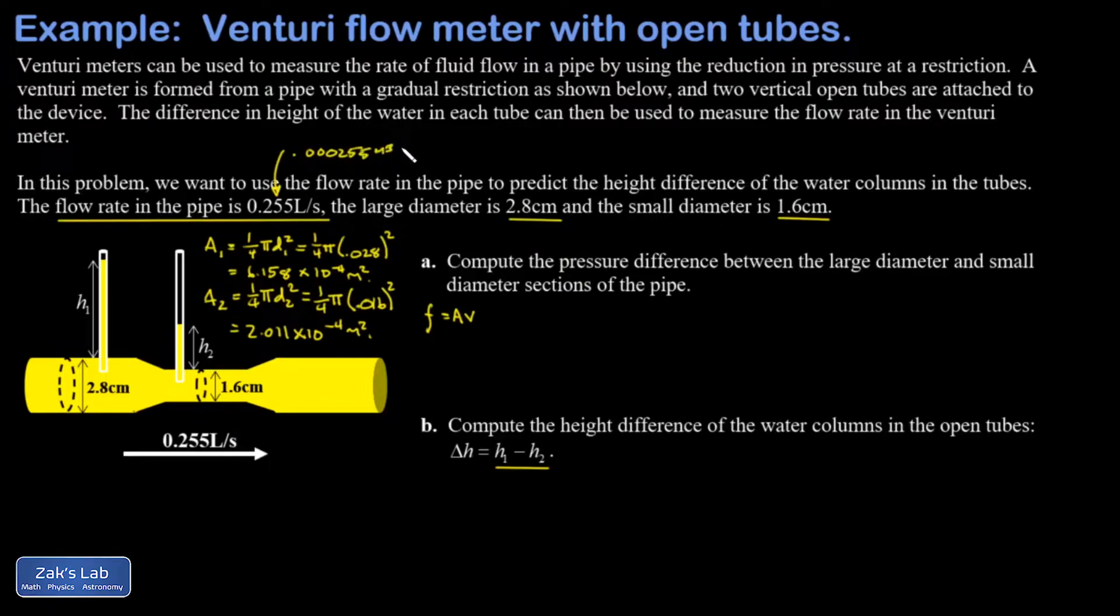We get back into part A trying to find the fluid velocity in section one. That's the flow rate divided by A1. If you follow the units we end up with meters per second, which is good, that's units of speed. When I crunch the numbers I get 0.414 meters per second. That's the fluid speed in the large part of the pipe.